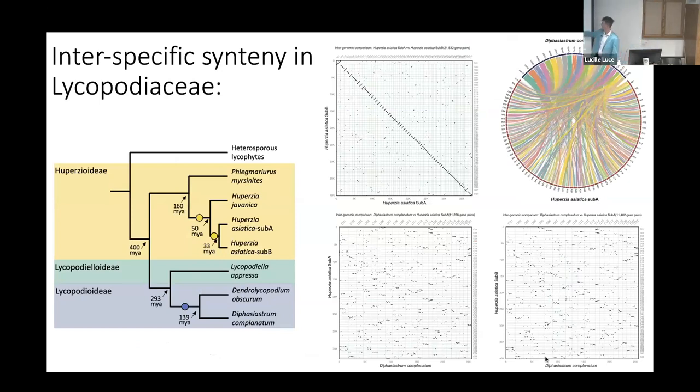But again, what was exciting was not that we identified whole genome duplications. Lycopodiaceae is rife with whole genome duplication. What was exciting was the synteny. We have our phylogeny here with whole genome duplications marked on it, and here we have intergenomic synteny plots. The first one shows synteny between the two subgenomes of Huperzia asiatica. These species diverged 33 million years ago, which is certainly not too long for synteny to be preserved, but the representation is almost perfectly preserved across both genomes. They're almost identical in gene order, which is incredible after 33 million years.